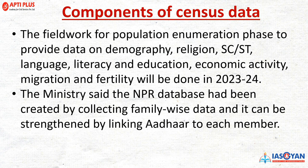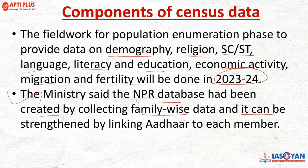The components of census data include field work population enumerations covering demography, religion, STs/SCs, language, literacy, education, economic activity, migration, and fertility — all to be done by 2023–2024. The Primary Census Abstract, also known as PCA, will provide village-level data on important indicators. The ministry noted that NPR data was created by collecting family-wise data and can be strengthened by linking Aadhaar to each member.